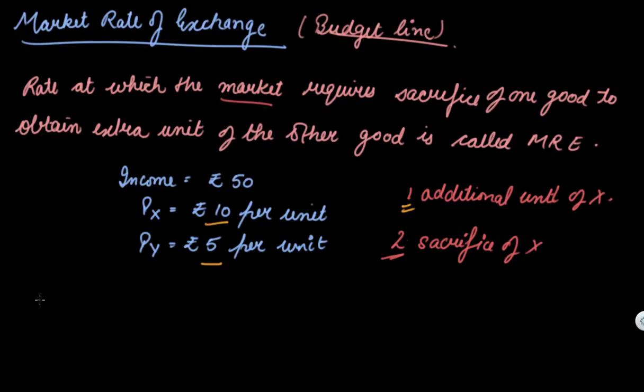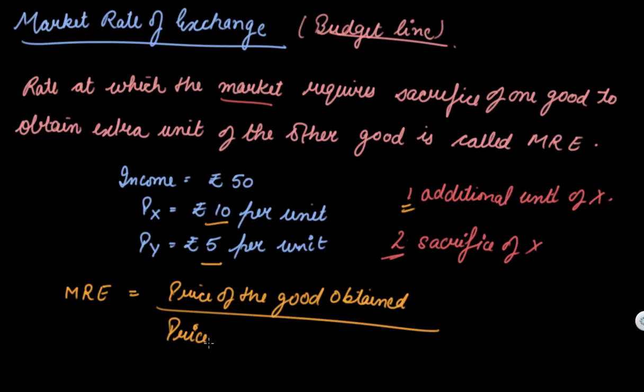The marginal rate of exchange is calculated by dividing the price of the good obtained by the price of the good sacrificed. The price of good X is 10, and you're sacrificing Y at 5, so 10 divided by 5 equals 2. This is your marginal rate of exchange.